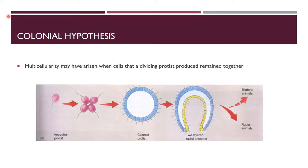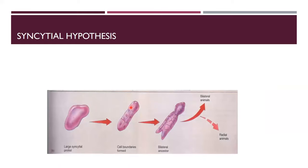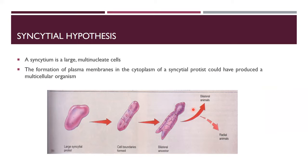According to the colonial hypothesis, a protist divides into different cells that remain in colonial form. The second hypothesis is the syncytial hypothesis: a syncytium is a large multi-nucleate cell — a cell in which many nuclei exist. The formation of plasma membranes within the cytoplasm of a syncytial protist could have produced a multicellular organism.